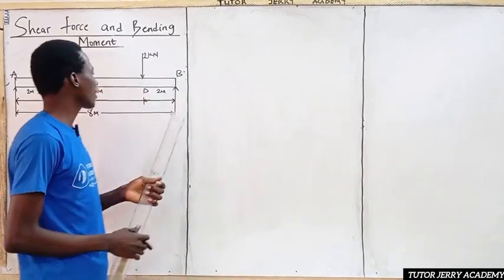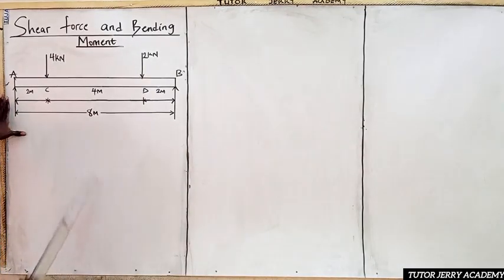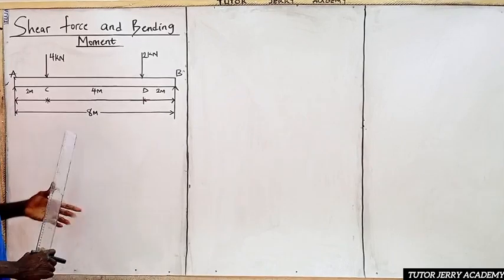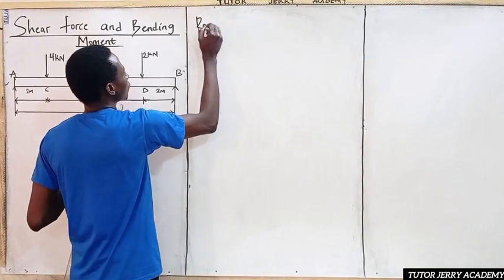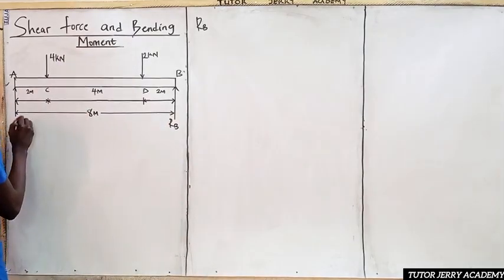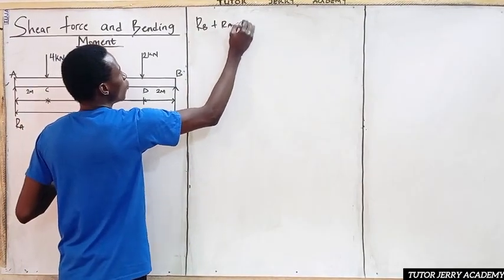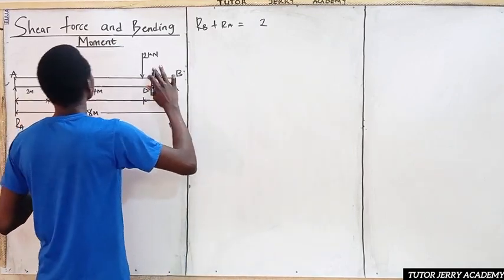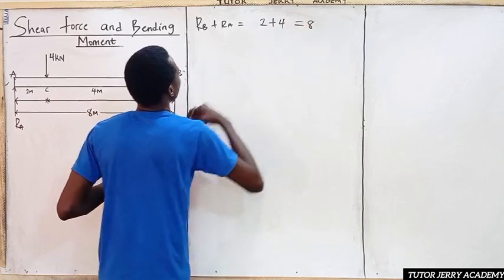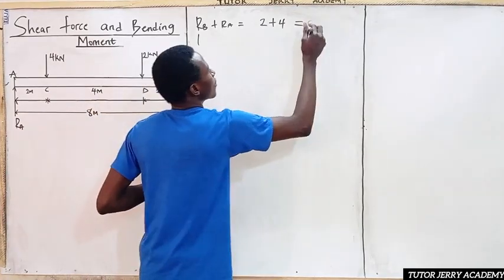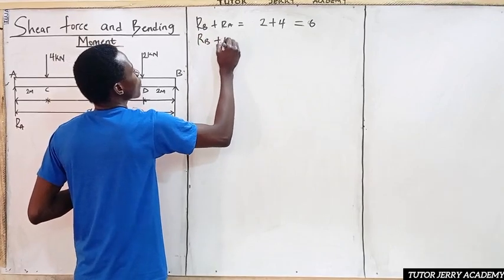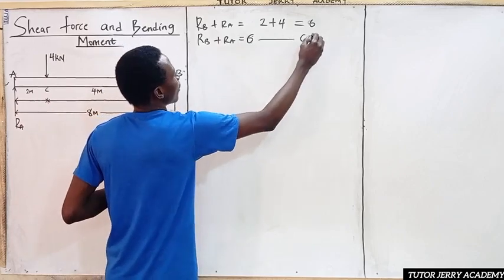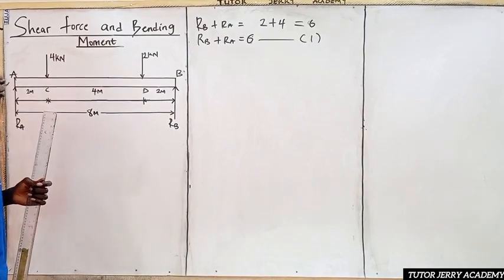The first thing we are going to look at is all the forces. We know that the sum of upward forces equals the sum of downward forces, so it implies that R_B plus R_A will be equal to six. So R_B plus R_A equals six — this will be equation one.